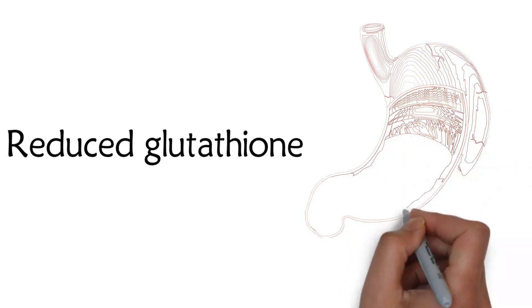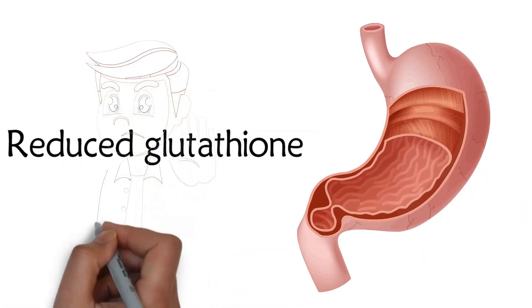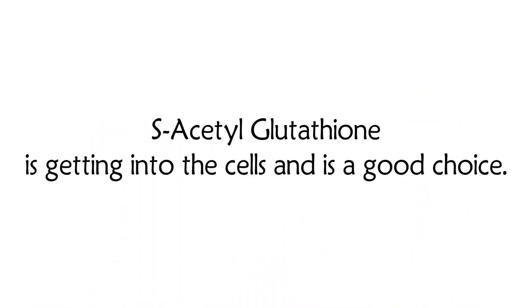Reduced glutathione, the most common form of glutathione, is oxidized in the stomach and not much gets into the cells. So don't make the mistake of using that. S-acetyl glutathione is getting into the cells and is a good choice.